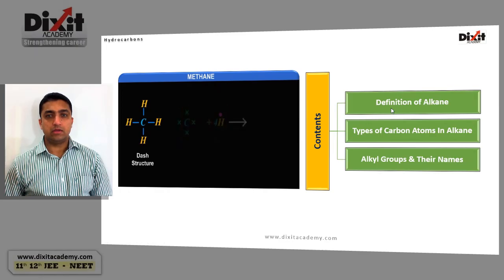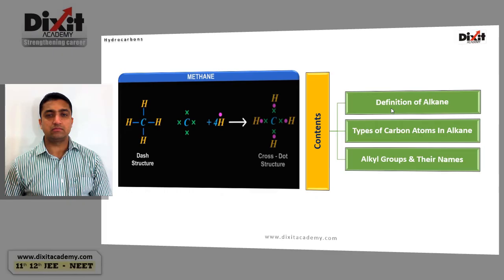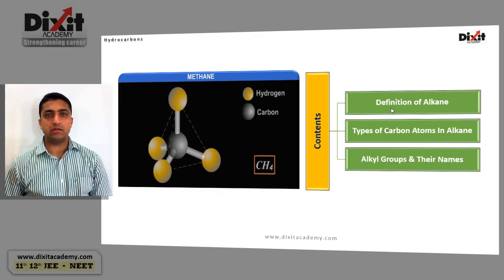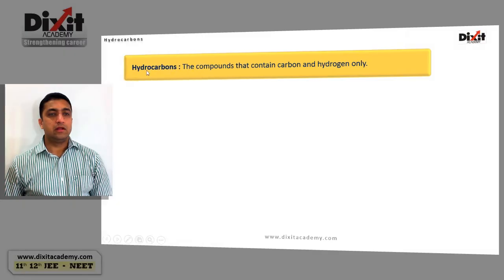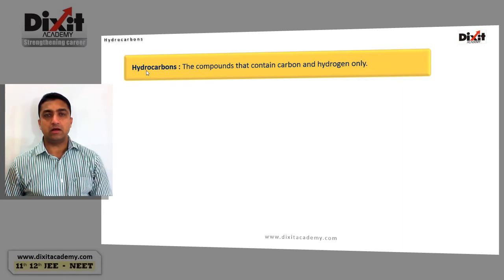Hello and welcome. In this video lesson we are going to discuss the definition of alkane, types of carbon atoms in alkane, alkyl groups and their names in the common and IUPAC system. Let us begin with the definition of hydrocarbon. As the name suggests, organic compounds which contain carbon and hydrogen only are called hydrocarbons. Alkane, alkene, and alkyne are examples of hydrocarbons.